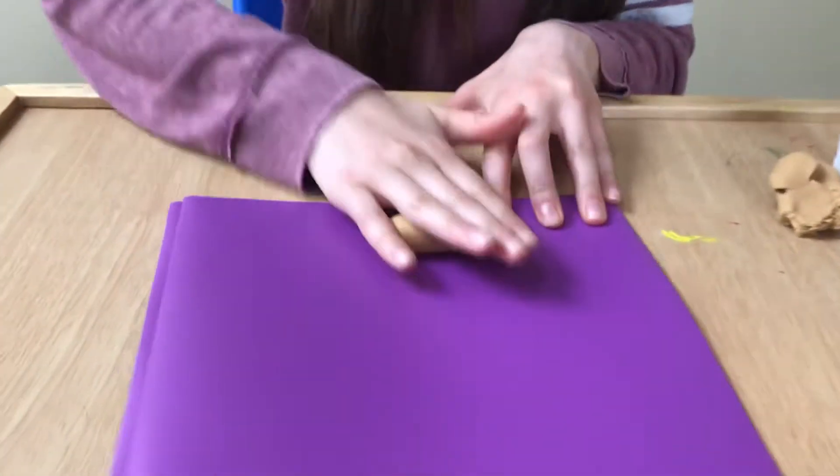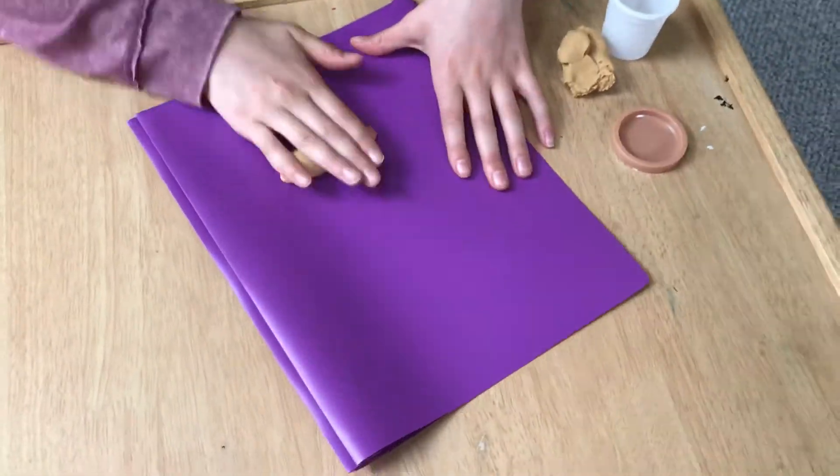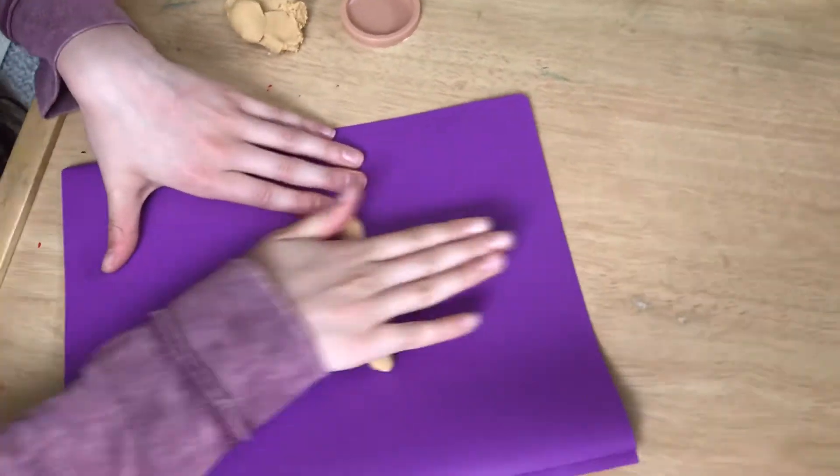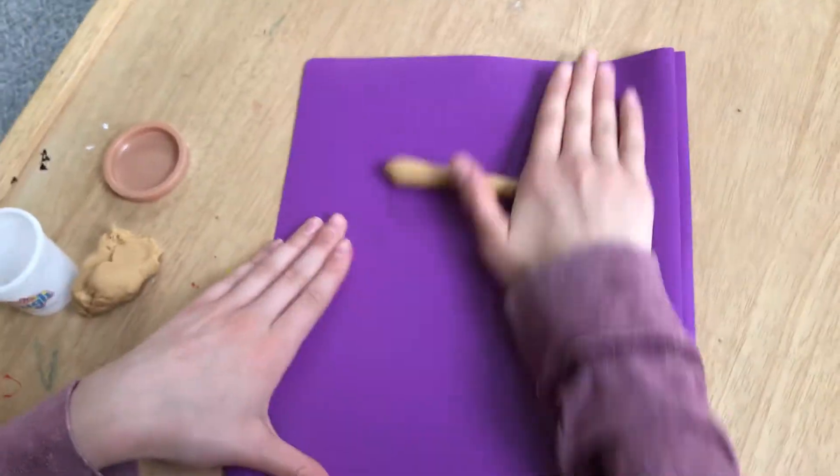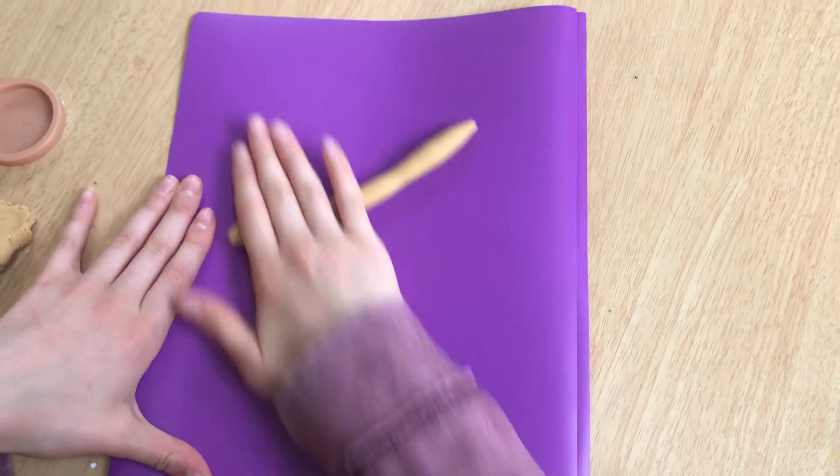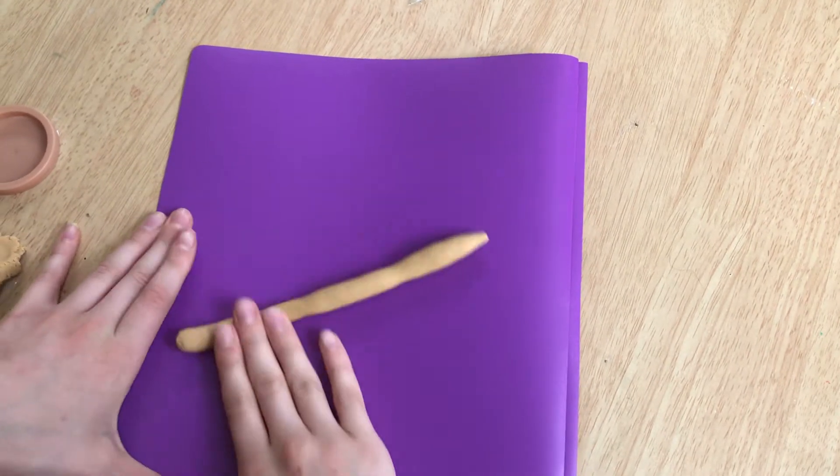What letter should we start with? Let's start with F. To make F, we have to roll out our Play-Doh. You might have to hold down something if you're rolling your Play-Doh not on the table. Use your palms or your fingertips to roll out a big line.